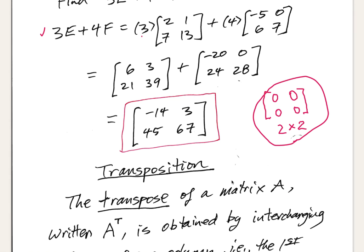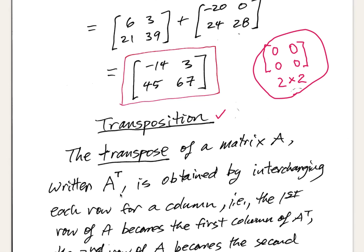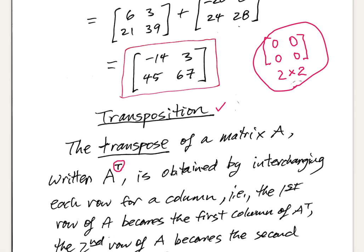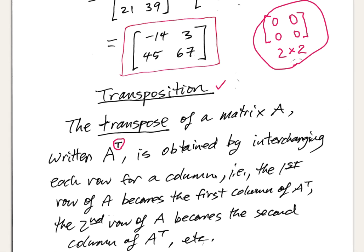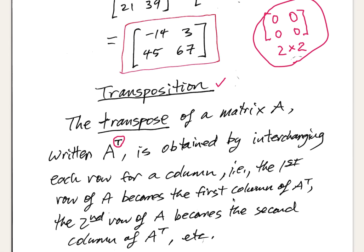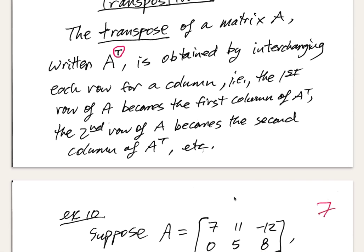There's one other operation that will be helpful when we start talking about matrix multiplication: the transpose of a matrix, written with a superscript capital T, like A^T. It's obtained by interchanging each row for a column, so the first row becomes the first column of the transpose, the second row becomes the second column, and so forth. The easiest way to see how to find the transpose is to look at a concrete example.